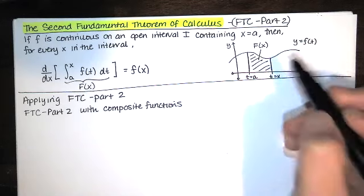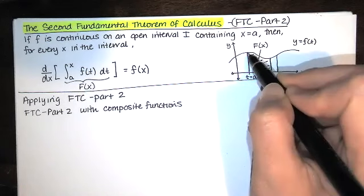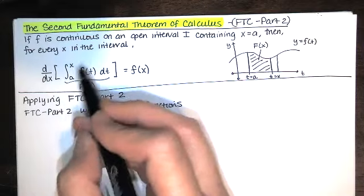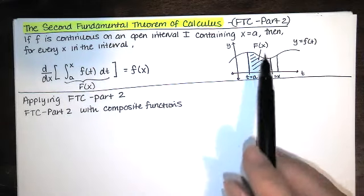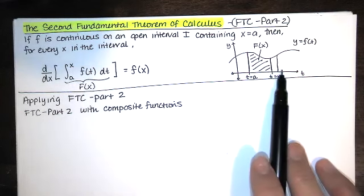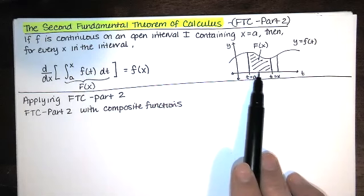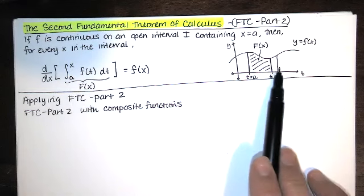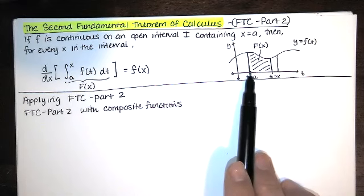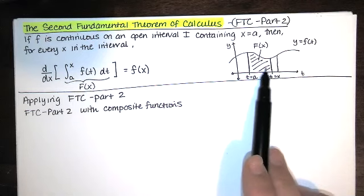As x increases, that area is increasing. Sometime later, f of x is going to be this area. When this upper limit is a, we have the integral from a to a of f of t dt and we get zero. So this is an area function, but it's accumulating area the whole time. As this variable x increases, that area is getting larger and larger, provided that f is continuous on that open interval containing a. As long as this function continues to be continuous, we can keep finding this increasing area.